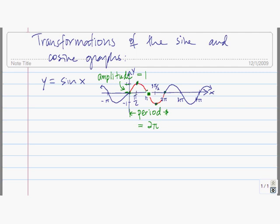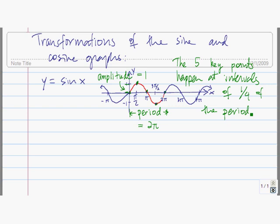These five key points happen at intervals of one-fourth of the period. The way the sine graph goes is it starts on the x-axis at x equals zero. One-fourth of the way across the period, it's at the high point. Halfway across, it's back at the x-axis. Three-fourths of the way across, it's down at the low point. And then at the end, it's back at the x-axis.